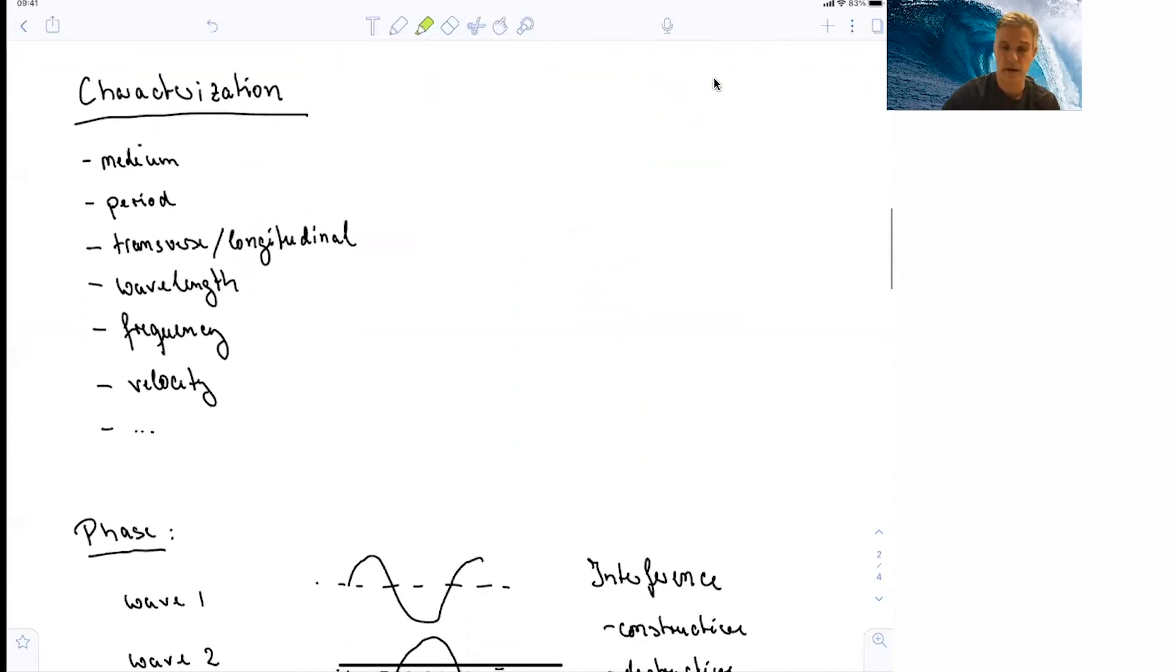We can continue with the characterization and be a little bit more complete. We can start from the medium, the period, polarization, transverse, longitudinal, the wavelength, frequency, velocity, or even how much energy is being carried by the wave.